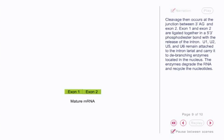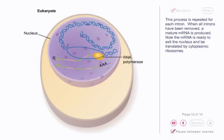U1, U2, U5, and U6 remain attached to the intron lariat and carry it to debranching enzymes located in the nucleus. The enzymes degrade the RNA and recycle the nucleotides. This process is repeated for each intron. When all introns have been removed, a mature mRNA is produced. Now the mRNA is ready to exit the nucleus and be translated by cytoplasmic ribosomes.